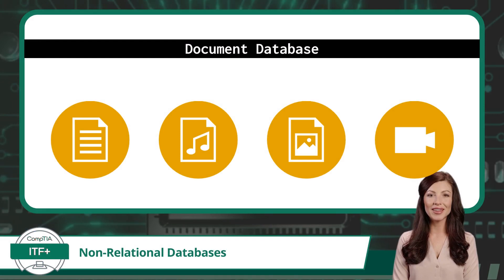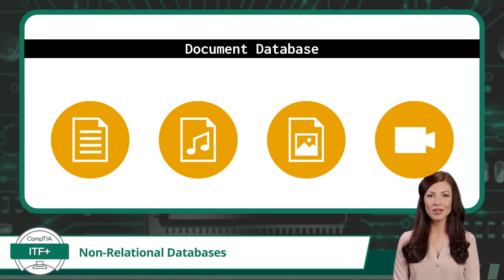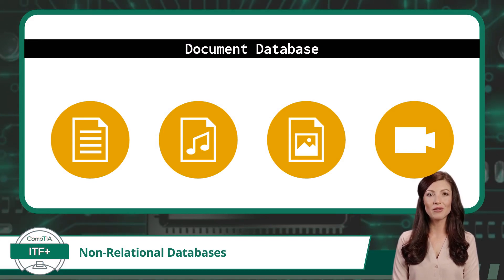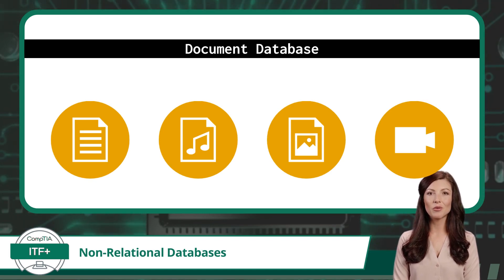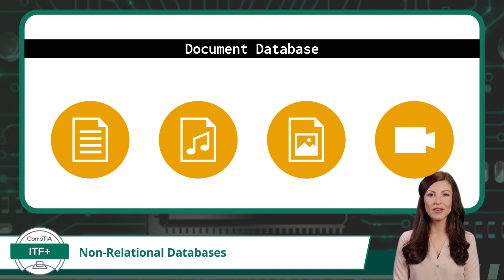The second type of non-relational database we will cover is the document database. A document database works just like the file system on your computer and is excellent for situations where your data doesn't fit neatly into tables or rows, like a blog entry or social media post. If your data is comprised of text files, audio, images, or videos, then a document database may be your best bet.